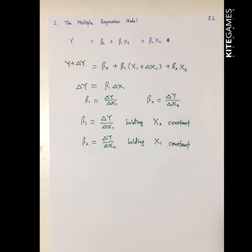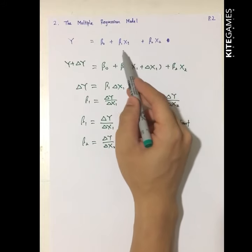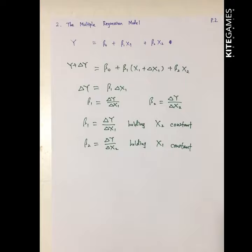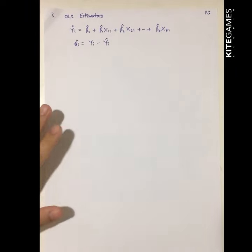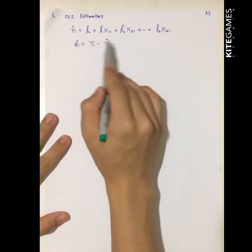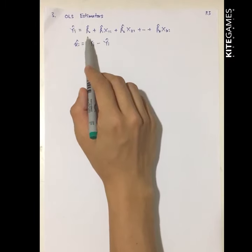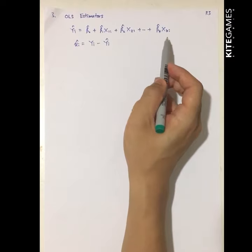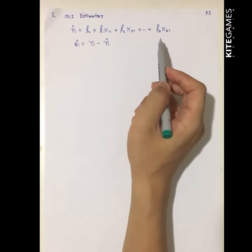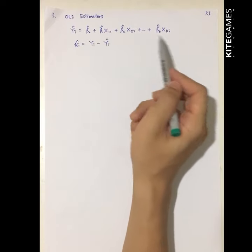Next, we look at the OLS estimators for multiple regression. Since the true equation may contain two or more variables, we need to estimate them. Now assume Yᵢ takes K variables: Yᵢ equals beta 0 hat plus beta 1 hat X1ᵢ plus beta 2 hat X2ᵢ up to beta K hat times XKᵢ. How do we get beta 1 hat, beta 2 hat, up to beta K hat?